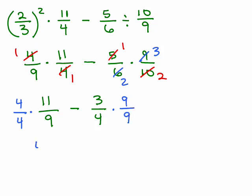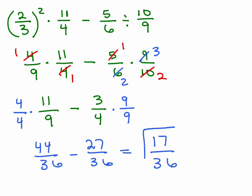So this would give me 44 over 36 minus 27 over 36, and now, I just have to do 44 minus 27, which is 17 over 36.